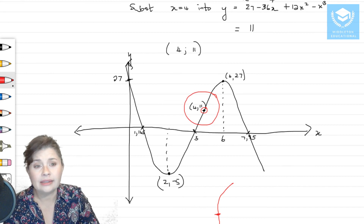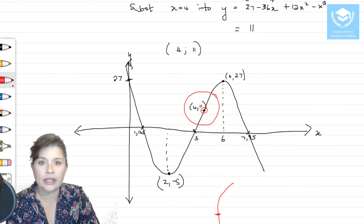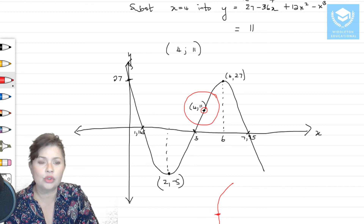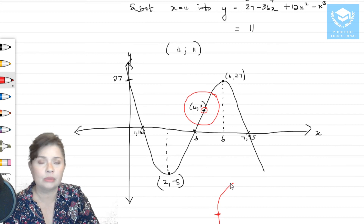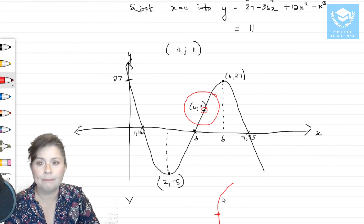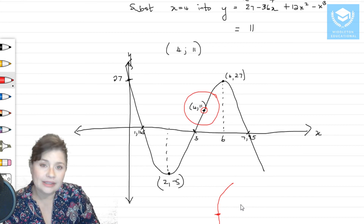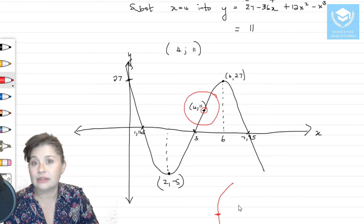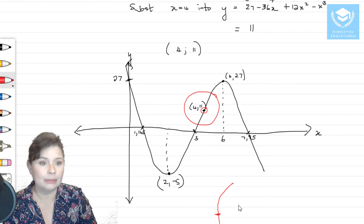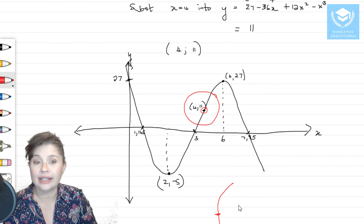That is how you would sketch any curve — it applies to any function. If you have x to the power of four, you're probably going to get more peaks, more maximums and more minimums. I hope that video was useful to you. If you did find it useful, please give it a thumbs up and a like. If not, please leave a comment on what I could explain better. I'll see you in the next video — bye!